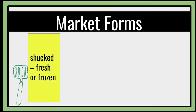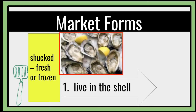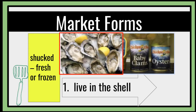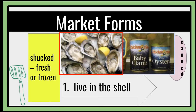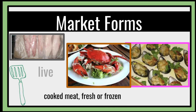In the market forms, we have to take note that when it comes to shellfish, they can be shucked — fresh or frozen — or they may be live in the shell. We also have kan, though I think these are not yet available in the Philippines. On the other market forms, we can have cooked meat that can be either fresh or frozen, or we can also have the live one.